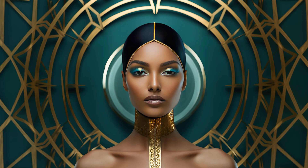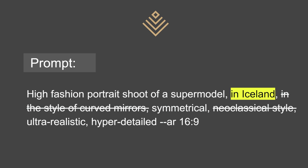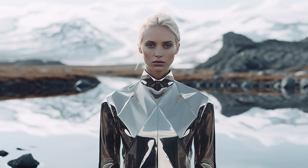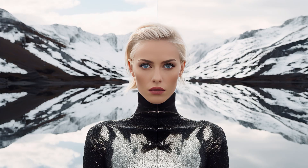This is what that prompt produced — I also added the word 'Indian' for the nationality. The first thing I do is take out two things: curved mirrors and neoclassical style. I also randomly added Iceland because I wanted to place the supermodel somewhere. So let's see what happens. These are the images once I removed those two parameters and added Iceland. You may notice there's a line in the middle — that sometimes happens when you specify symmetrical images.